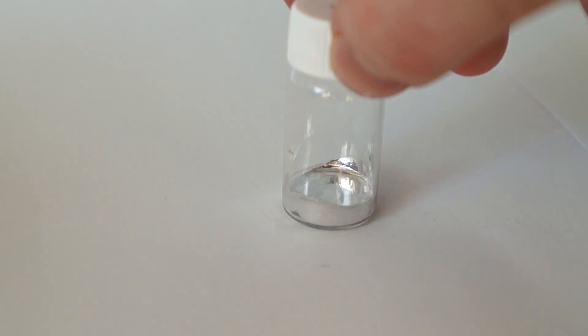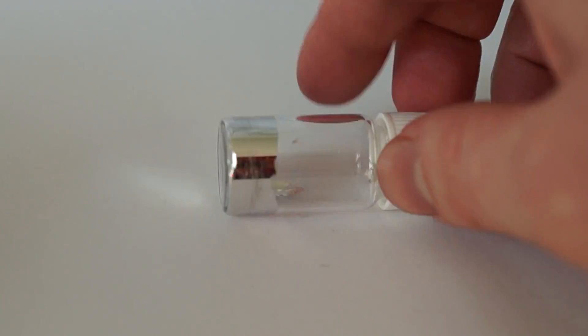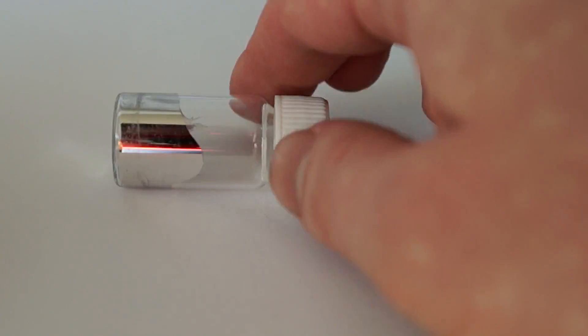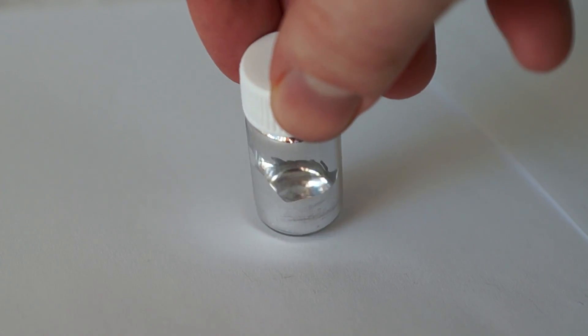This alloy can very well moisten a glass, forming a beautiful mirror. By the way, in some cars, headlight mirrors are covered with indium metal.